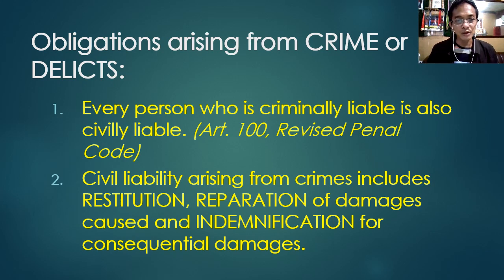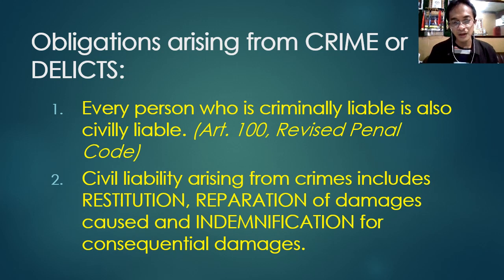We are talking about delicts — the fourth source of obligation. These are the obligations under civil liability: the person committing the crime may be required to pay restitution, reparation, and indemnification.